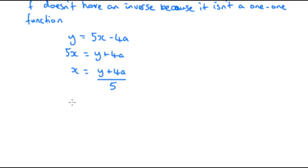And then instead of writing x, once x is the subject, we're going to write the inverse function. So f dash x, sorry, f to the minus 1 of x. And where we've got y, we're going to put x back in place. So a fifth of x plus 4a for the inverse function.